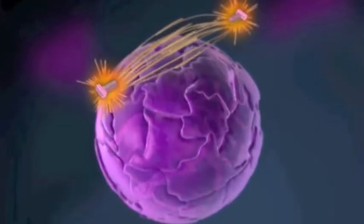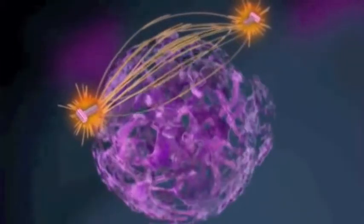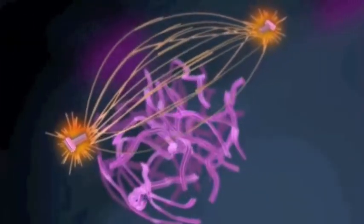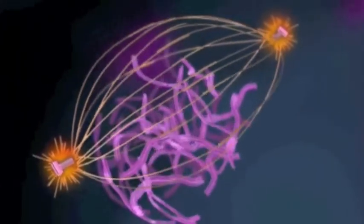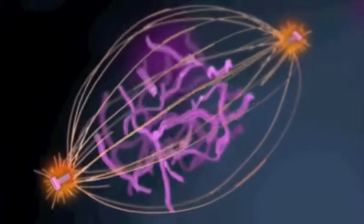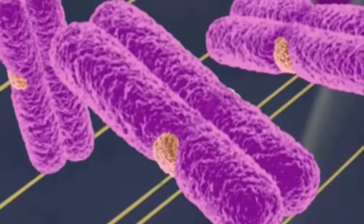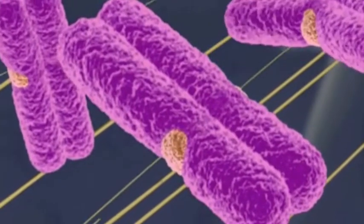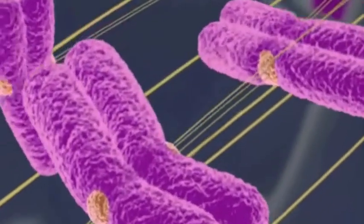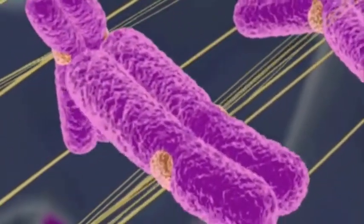As the chromosomes continue to condense, the nuclear envelope breaks up. The array of spindle microtubules is now extensive, and the chromosomes are fully condensed. Spindle fibers from each pole attach to protein structures located at the centromere of each sister chromatid.